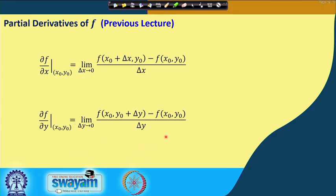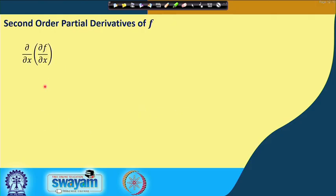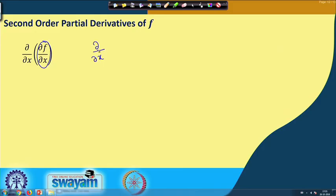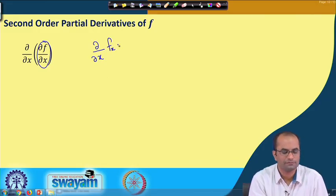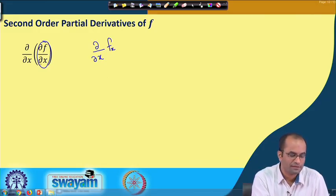Now we will continue this for higher order derivatives. What will happen if we take, for example, the derivative of f with respect to x two times? In this case, this is the notation: we have the partial derivative with respect to x, and then we want to take again the partial derivative with respect to x. The idea remains the same because we have this partial derivative with respect to x as another function, which I am calling as f_x — that is basically the notation of this partial derivative.